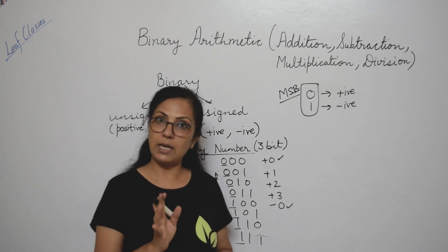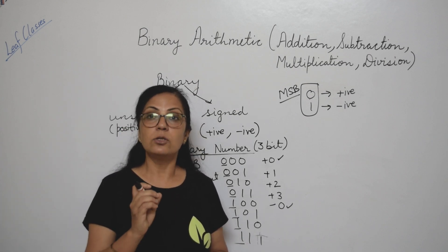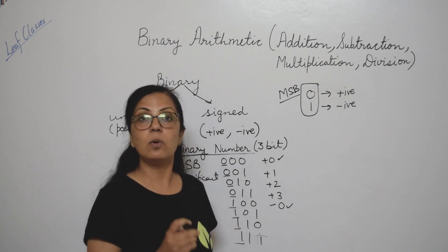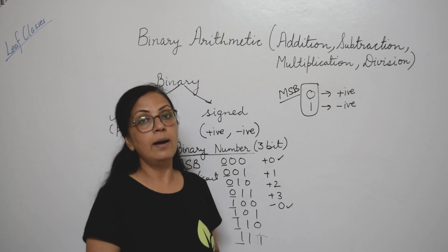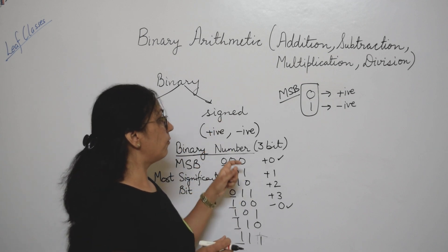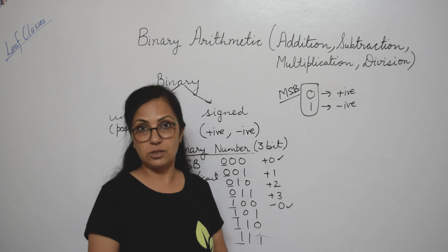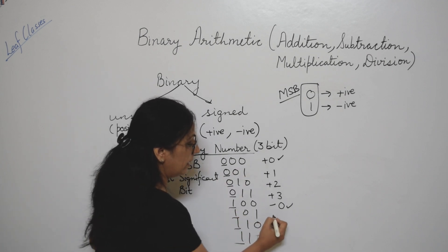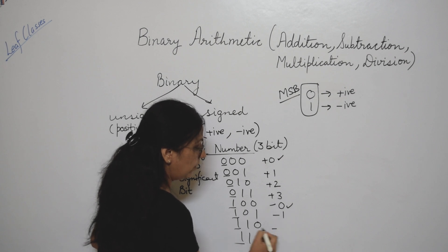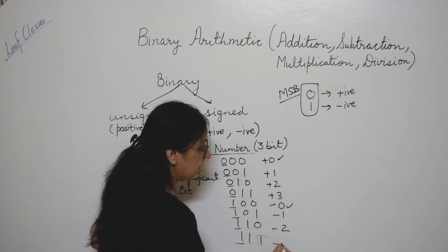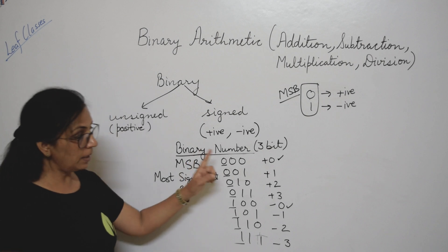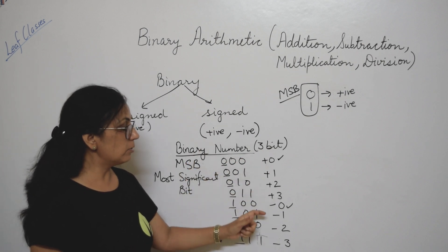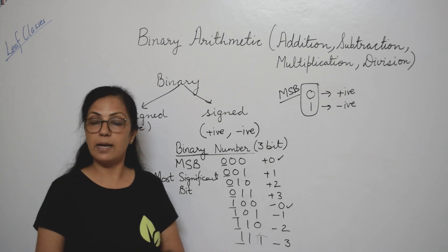Now, zero cannot be positive or negative. So this is also an important theory question: what are the shortcomings or disadvantages of the signed bit representation? The disadvantage is that 0 has two representations — plus 0 and minus 0, which is redundant. We have plus 0 here and minus 0 there, so this is a notable drawback of signed magnitude representation.